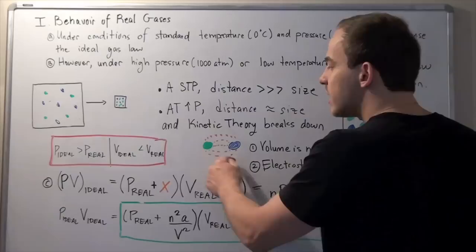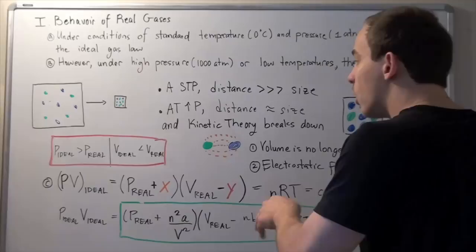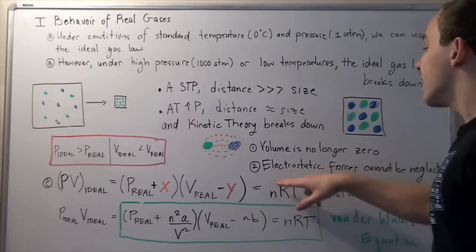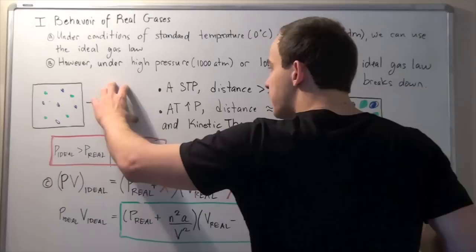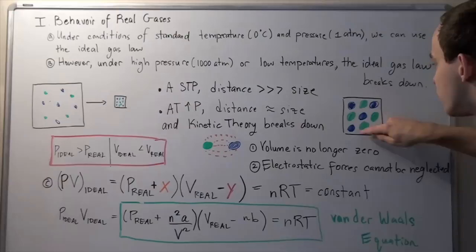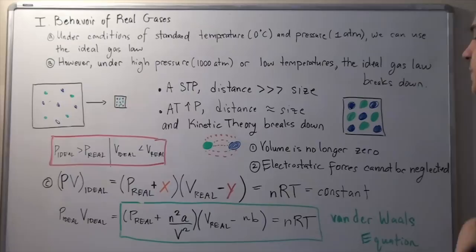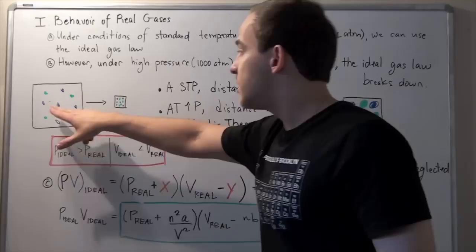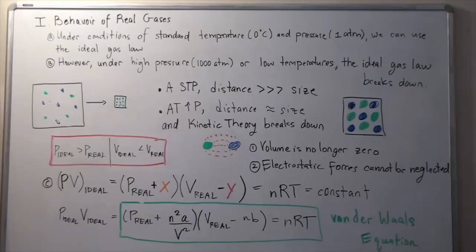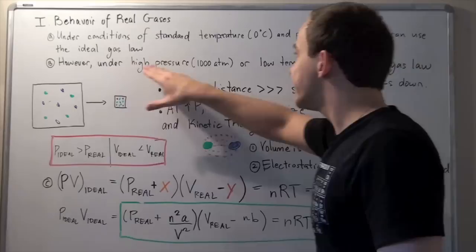So if one molecule is positive and another is negative, they will attract each other according to Coulomb's law. One of the assumptions of kinetic theory breaks down, namely that electrostatic forces cannot be neglected when pressures are very high. Looking at volume — zooming in on the picture — we can see the space between the molecules is approximately the same as the volume of the molecules themselves. The volume can no longer be neglected; we can't say the volume is zero because now the molecules actually take up a lot of space. The second assumption of kinetic theory also breaks down: volume is no longer zero.